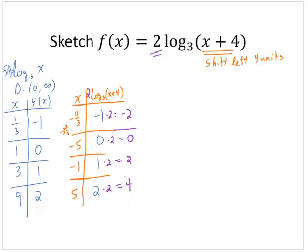So then for my function f of x equals 2 log base 3 of x plus 4, my ordered pairs are negative 11/3, negative 2, negative 5, 0, negative 1, 2, and 5, 4.